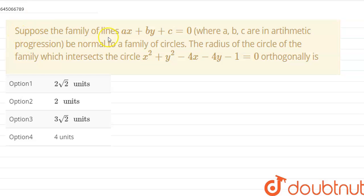Hello guys, today our question is suppose the family of lines ax plus by plus c equal to 0 where a, b, c are in arithmetic progression be normal to a family of circles. The radius of the circle of the family which intersects the circle x square plus y square minus 4x minus 4y minus 1 equal to 0, orthogonally is.